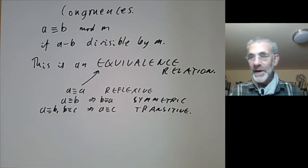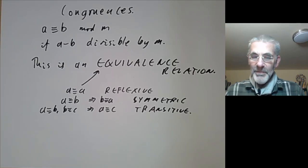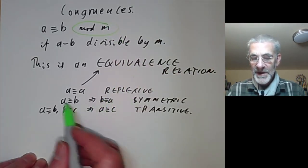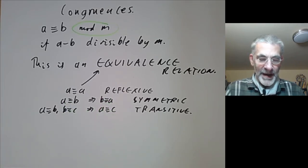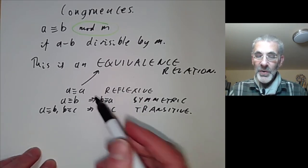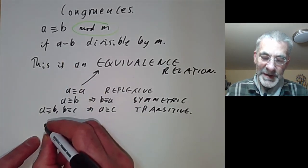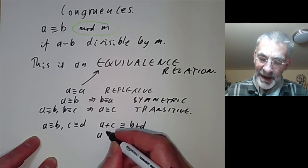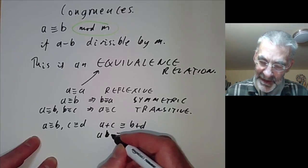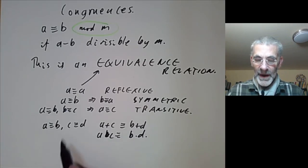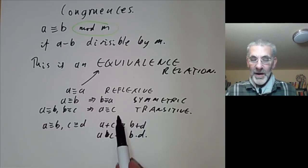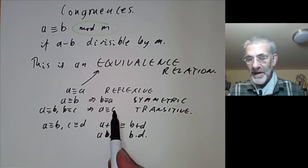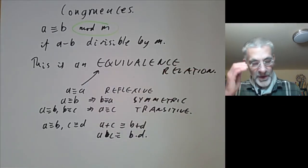Mathematicians are quite lazy and will often omit writing modulo m everywhere. Usually you fix m and omit it from the notation to make things simpler. Beyond the equivalence relation properties, we also want: if a is equivalent to b and c is equivalent to d, then a plus c is equivalent to b plus d, and a times c is equivalent to b times d. All of these properties are pretty trivial — for instance, transitivity just says that if m divides b minus a and m divides c minus b, then it divides a minus c.